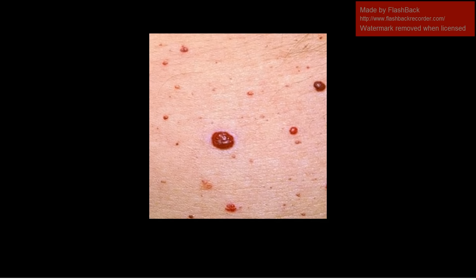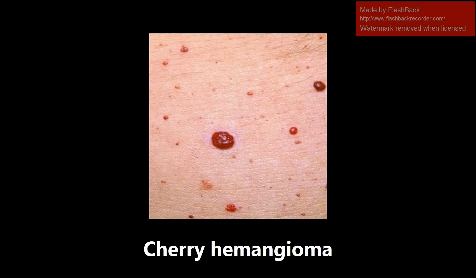This next one is a cherry hemangioma, which I always had a hard time with. Cherry hemangiomas are seen in adults, usually mid-middle aged adults. They're benign and adults usually have them throughout the rest of their life thereafter.